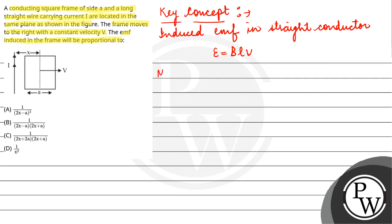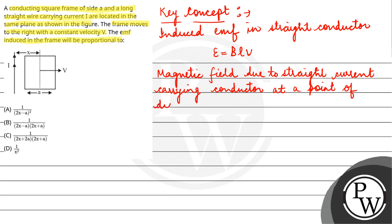And other thing is magnetic field due to straight current carrying conductor at a point of distance, let's say R. So here you have magnetic field mu naught I upon 2 pi R.